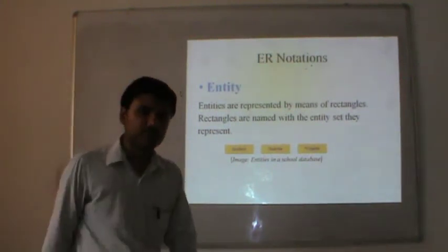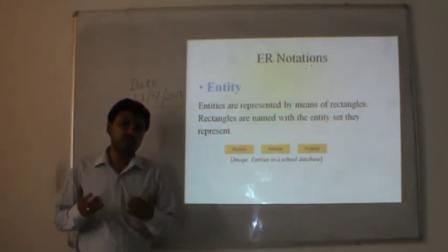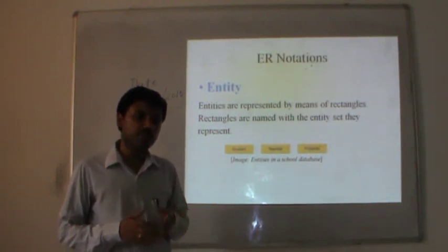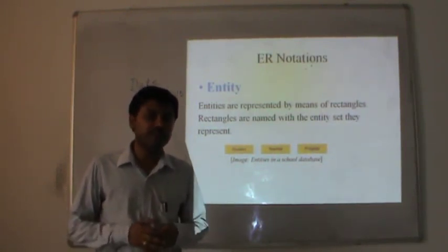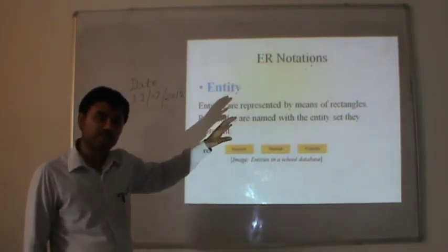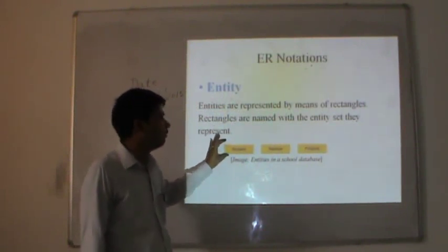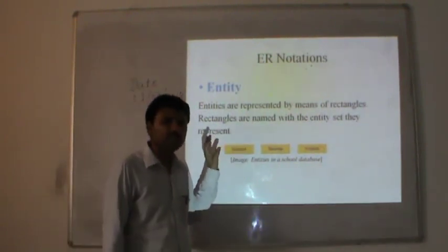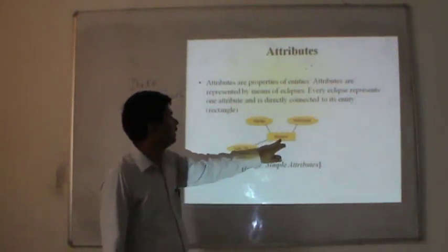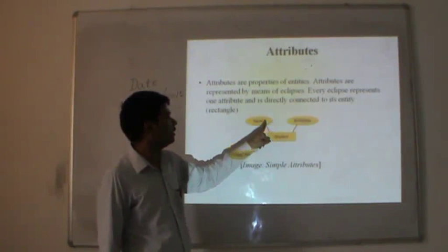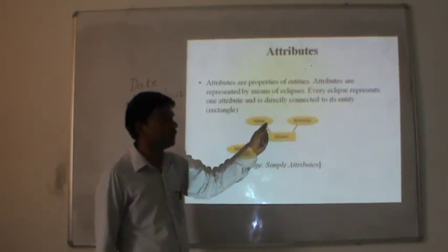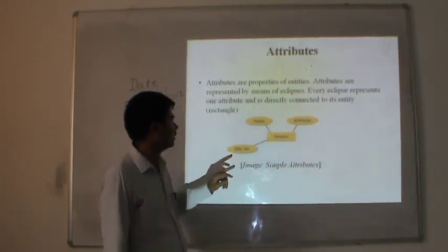Some ER notations: formally we will discuss ER notations in our coming lectures, where we will draw ER diagrams for given problems. Here we are discussing the different notations which are used for designing ER diagrams. Entities are represented with the help of rectangles. Attributes of a particular entity are represented with oval shapes connected to the entity in a balloon-type structure — like student with name, date of birth, and roll number.